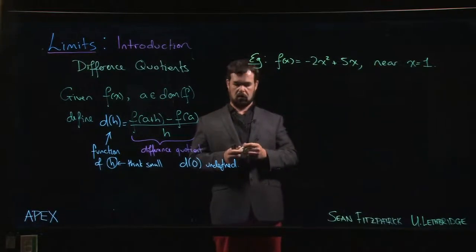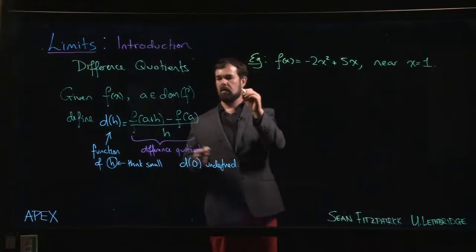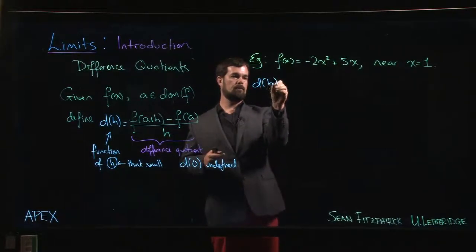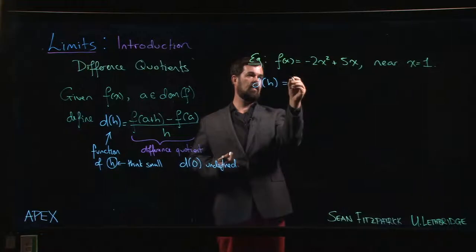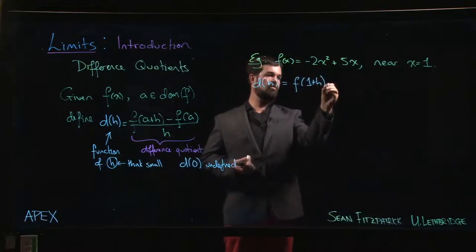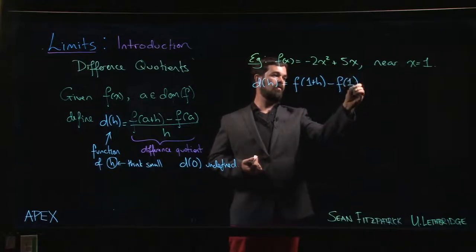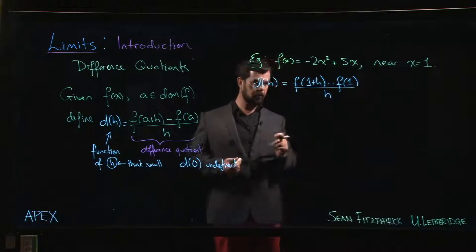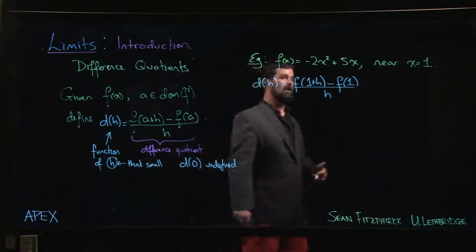Well, first of all, we're looking at what it's going to look like—it's going to be f(1+h) minus f(1) over h. Okay, that's the difference quotient.